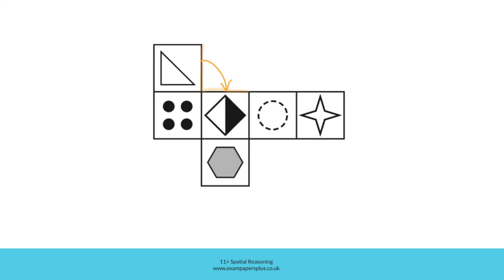Think about those other faces meeting one another. This face and this face would meet as these two edges meet each other. Then we can say that this edge and this edge mean that those two faces would also be next to one another. Faces which are next to one another cannot be opposite each other at the same time.